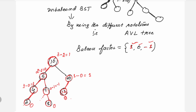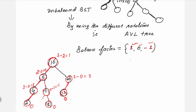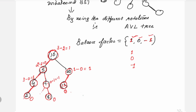The balance factor for every node should always be either 1, 0, or minus 1. If at any point you have a value greater than this, you are going to balance it. This example shown is an AVL tree because it is a balanced tree.